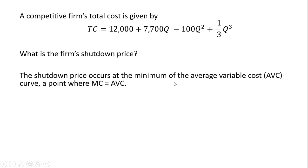The shutdown price occurs at the minimum of the average variable cost curve, a point where marginal cost equals average variable cost. So we're going to get two things here: we're going to get the marginal cost and then we're going to get average variable cost and set both equations equal to one another. So let's start with marginal cost.